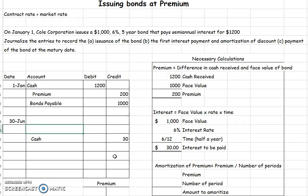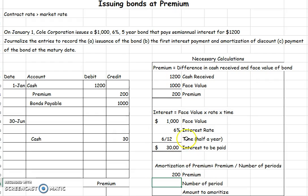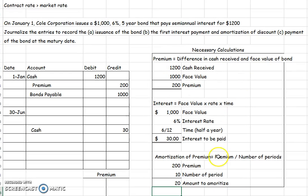Next, I need to amortize my premium — that means slowly reducing my premium over the life of the bond. I started off with a premium of $200. To find out how much to reduce each period: this is a 5-year bond that pays interest every 6 months, meaning twice a year. So 5 years times twice a year equals 10 periods. I amortize $200 divided by 10 periods, which is $20 every interest payment period.